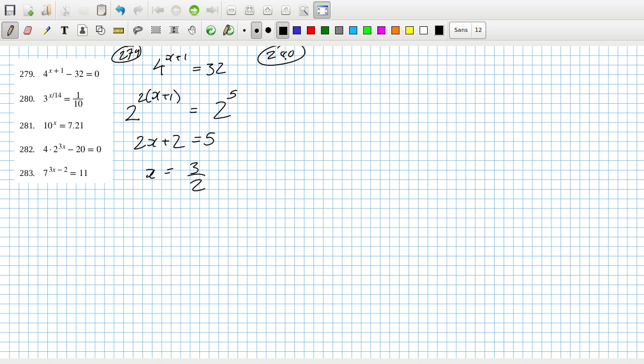280. Again, we could say x over 14 is equal to log base three of one over 10, or 10 to the minus one. So that means x would equal minus 14 log 3 of 10, which is roughly minus 29, by the way. That looks okay as well.